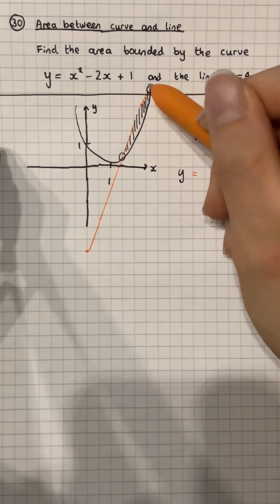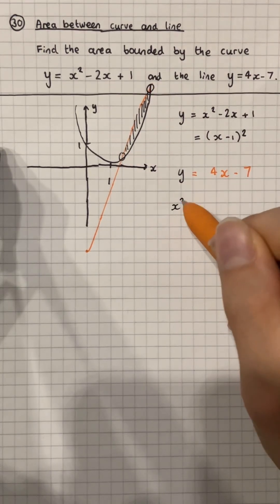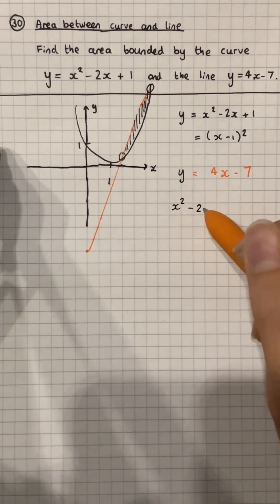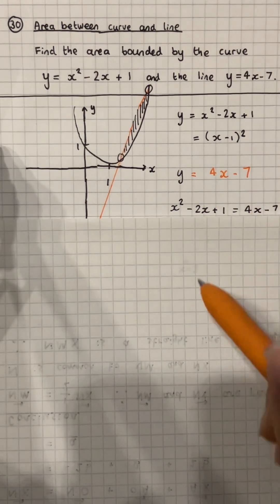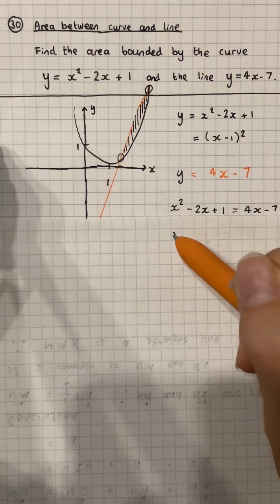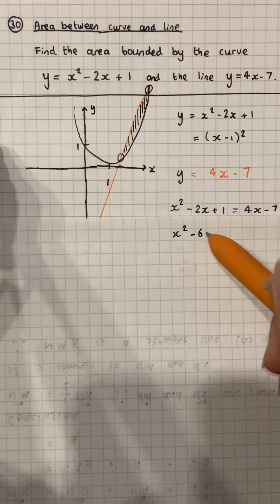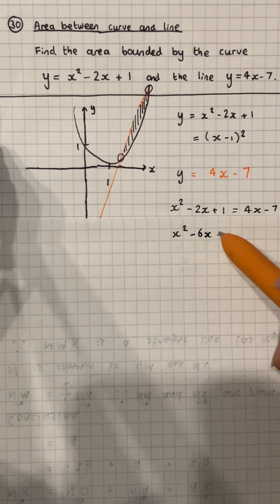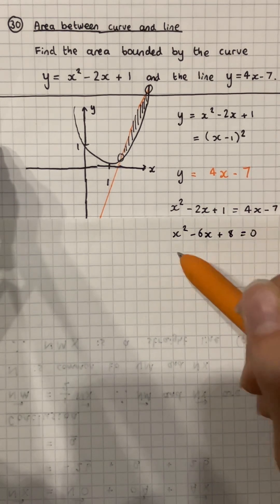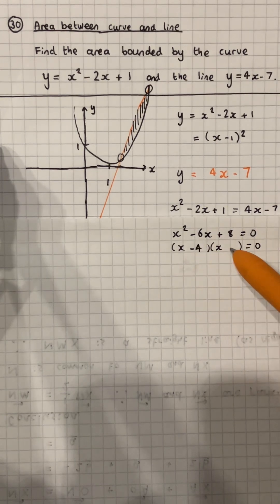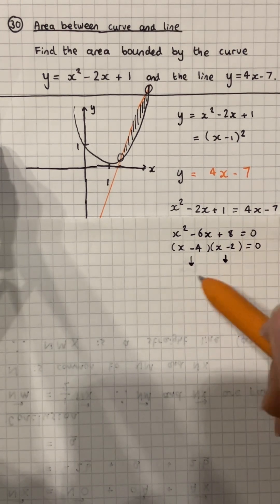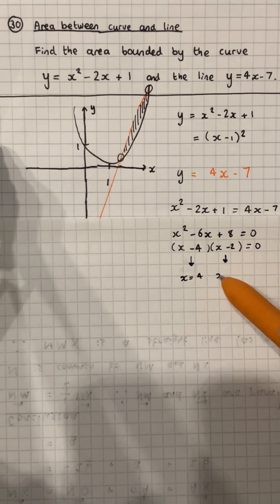There are two points of intersection, so let's find them. Set one equation equal to the other. If we rearrange, we get an expression which factorises nicely, giving us x equals 4 and x equals 2.